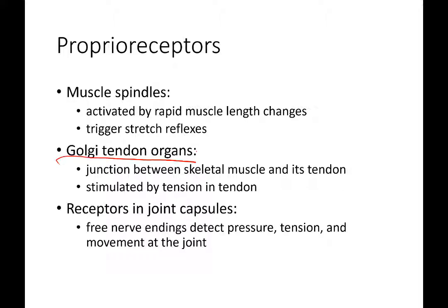Golgi tendon organs are located in the tendons. If you are contracting a muscle to such a degree that you could cause damage — pulling a ligament or breaking a bone — the Golgi tendon organ will deactivate that muscle to protect you. Receptors in joint capsules tell us where we are in space: even with eyes closed, you can tell if your arms are above or below your head, because these receptors send body position information to the brain without requiring visual input.